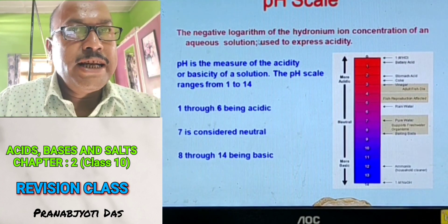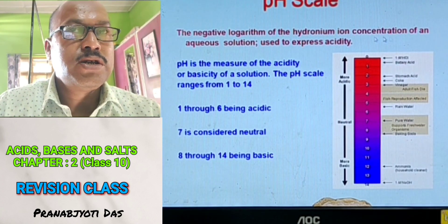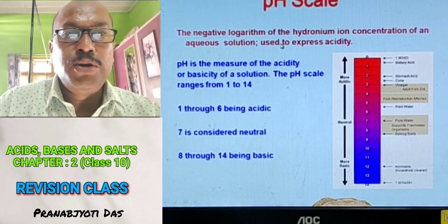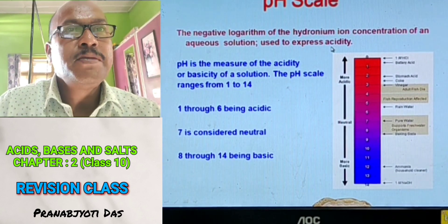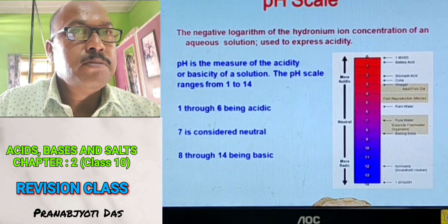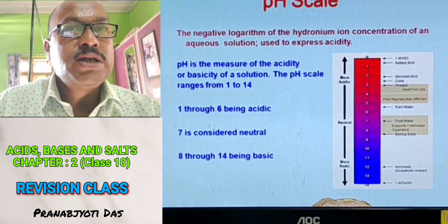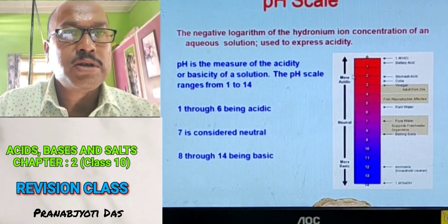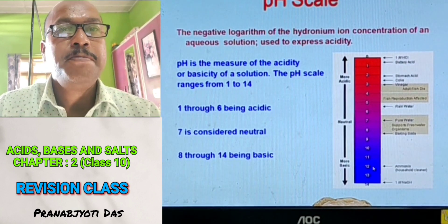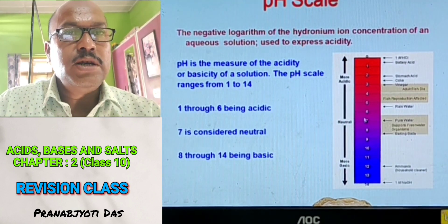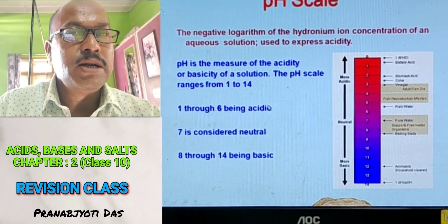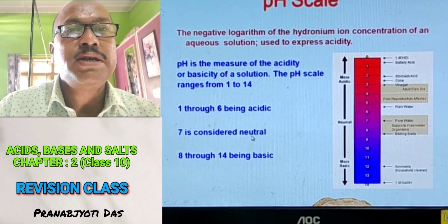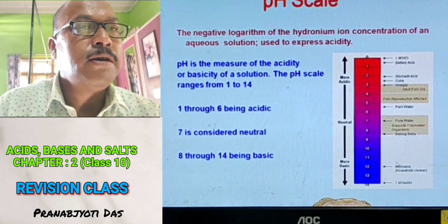pH Scale: The negative logarithm of hydrogen ion concentration of an aqueous solution is called the pH scale, and it is used to express the acidity or basicity of a particular solution. pH is the measure of acidity or basicity of a solution, and the scale ranges from 1 to 14. If the scale measures from 1 to 6, it is an acidic solution. If it measures 7, it is neutral — neither acidic nor basic. If it measures from 8 to 14, it is basic.